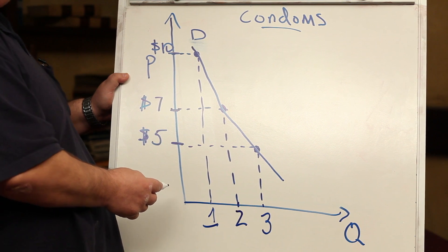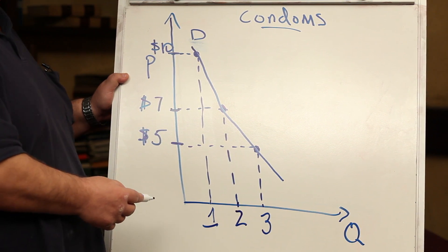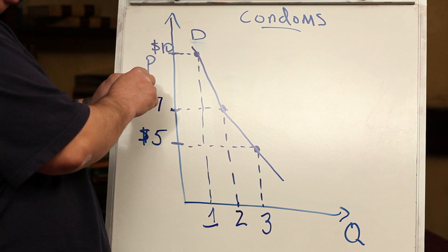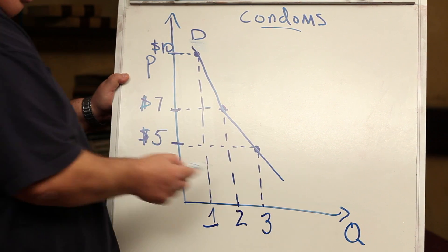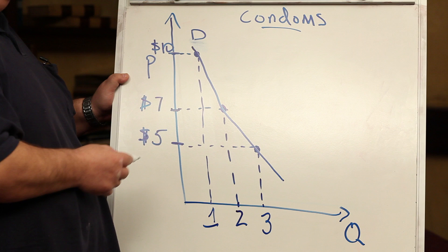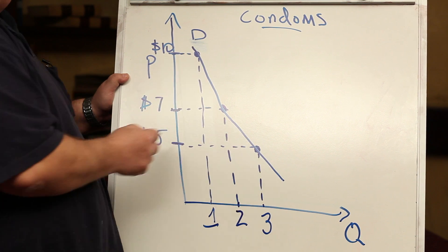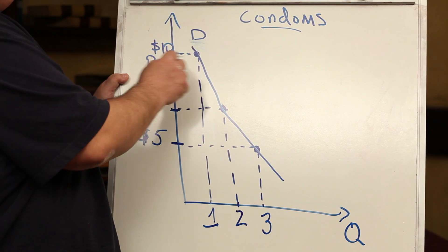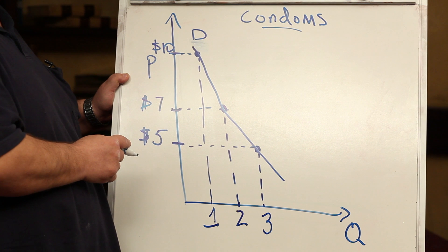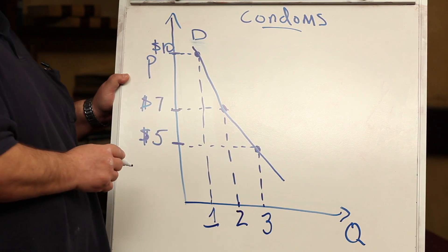But an inverse relationship between what? Simply between price and quantity demanded. What we're saying is that this demand curve consists of many different combinations of prices and quantity demanded.